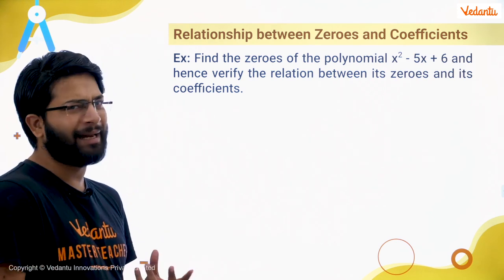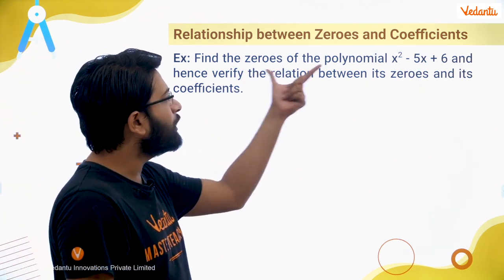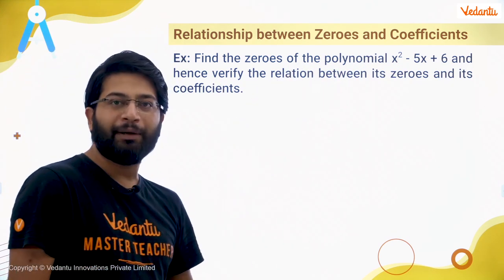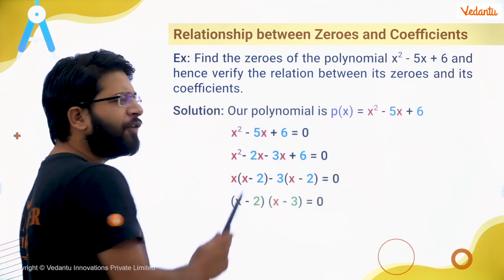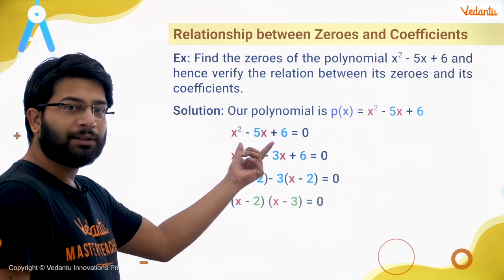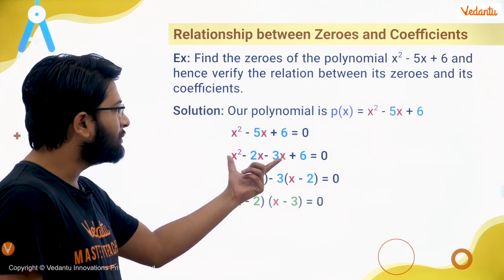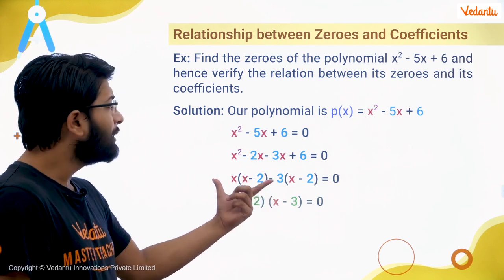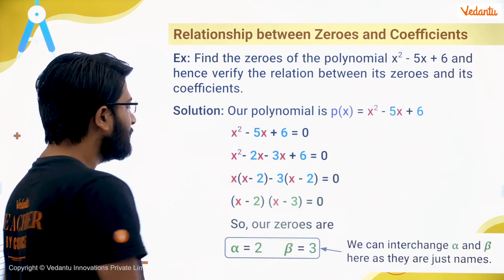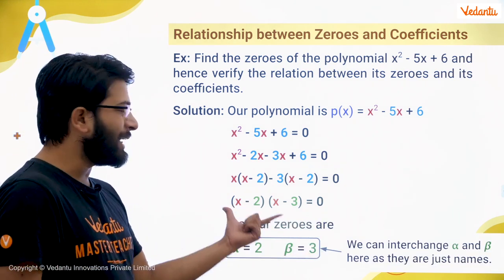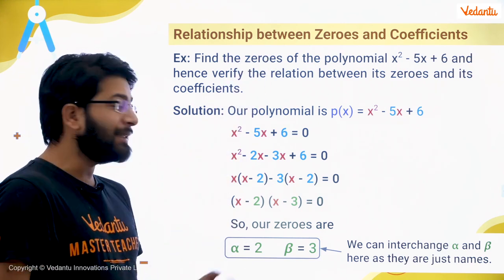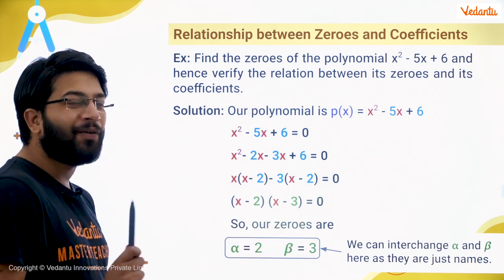Now let's see the same thing with the help of some examples. In this question, we have to find the zeros of this quadratic polynomial and verify the relationship between the zeros and the coefficients. First let's find the zeros — we know how to do it with the help of splitting the middle term. I have split the middle term, taken the common factors, and got two factors: x minus 2 and x minus 3. So the zeros are alpha equal to 2 and beta equal to 3.